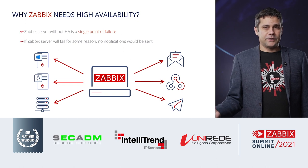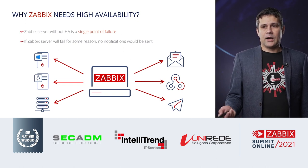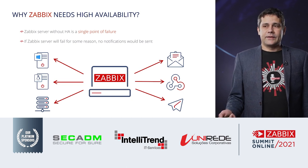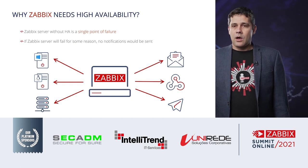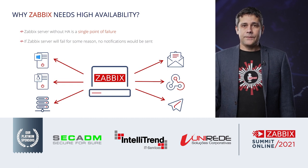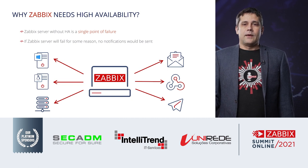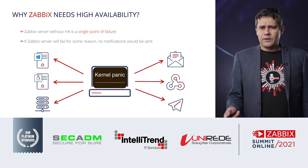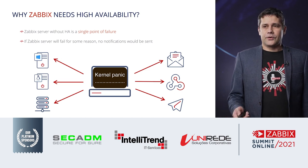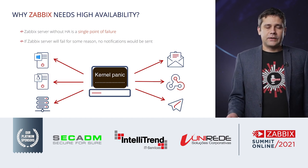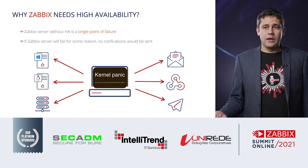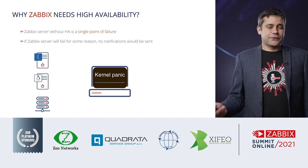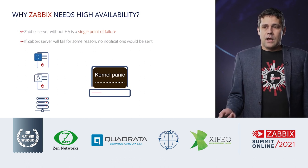Why does Zabbix need high availability? In a typical Zabbix setup, you have a Zabbix server, you have all your servers and devices monitored, and when something goes wrong, Zabbix sends out messages using email, webhooks, or any other defined media. But something may go wrong at any time. Let's say your Zabbix server crashes. Zabbix is very stable and unusual to crash, but maybe the OS will crash or you'll run out of disk space. Your Zabbix will no longer function and you'll no longer receive messages.